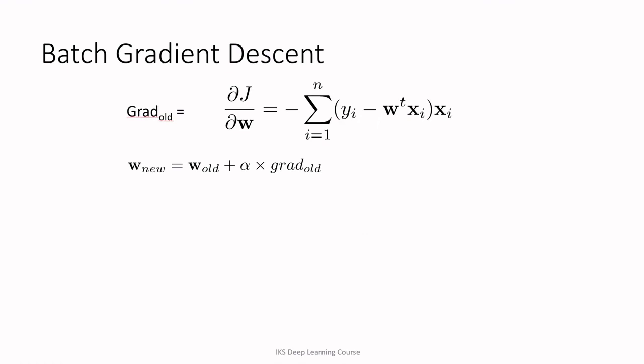This leads to what we call batch gradient descent. We calculate the partial derivative summed over all examples to get the batch gradient — using the entire batch of training examples. We then apply this batch gradient to compute the new weight vector: W_new = W_old + alpha * gradient at old position.